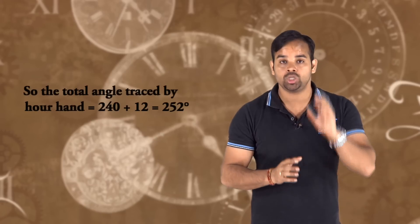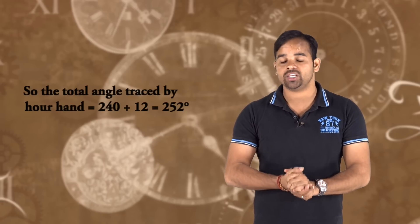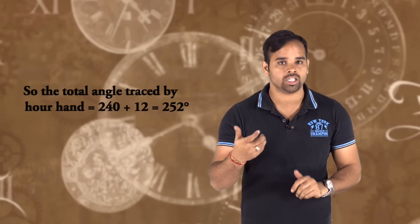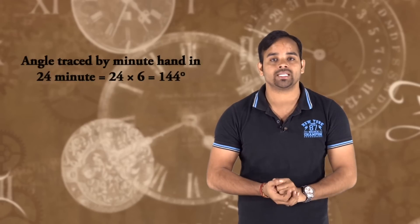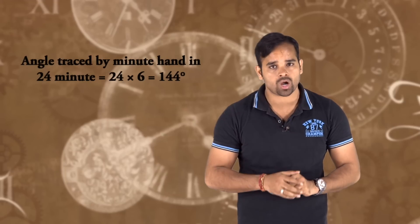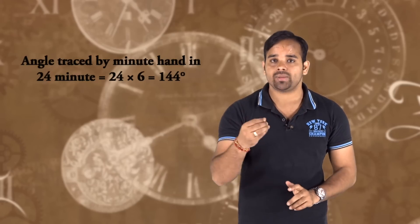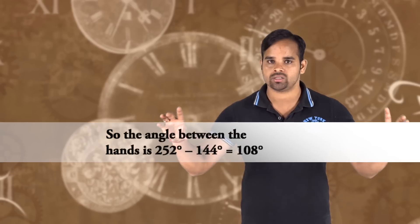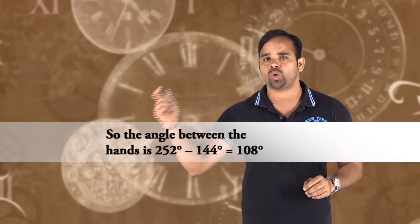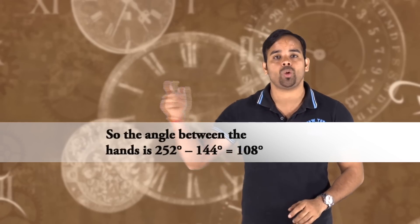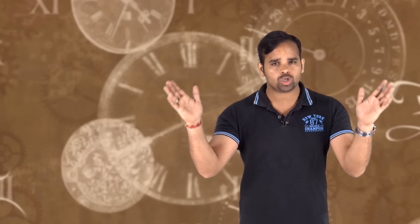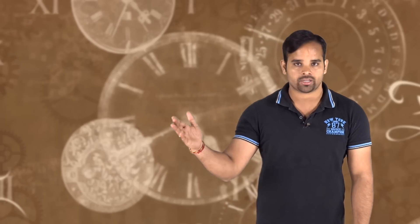So the hour hand is at 252 degrees. Now for the minute hand: the minute hand at 24 minutes is at 24 × 6 = 144 degrees. The difference is 252 minus 144, which equals 108 degrees. So the correct answer is 108 degrees.